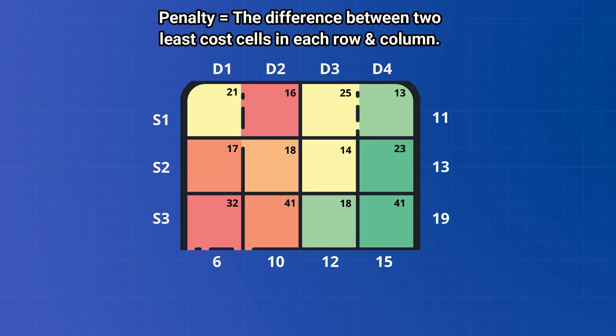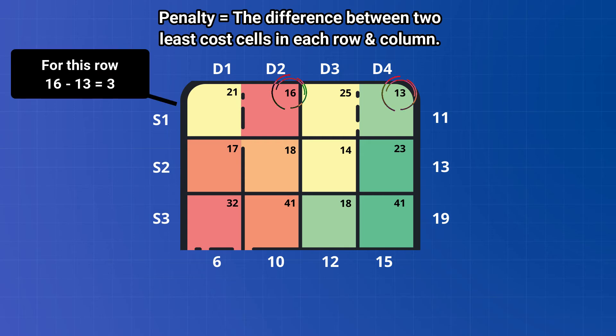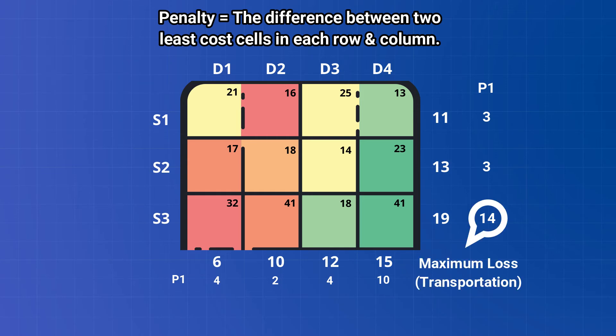Consider each row of the cost matrix individually and find the difference between two least cost cells. After we write them down in the new column and row namely P1, we will find out the maximum loss in the system.